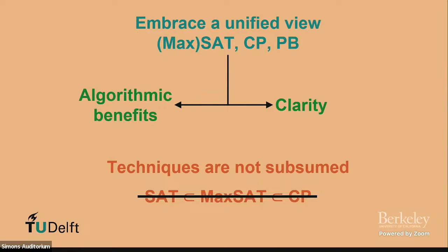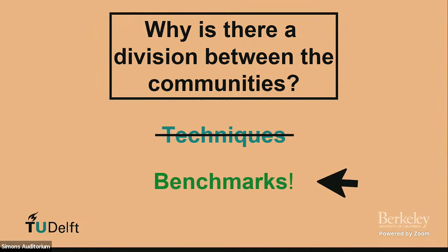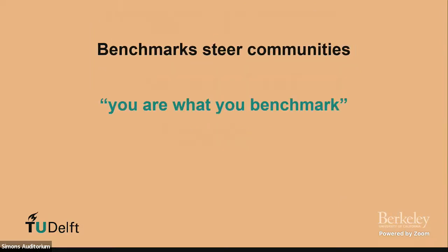Overall, I want to argue: we have this high-level view of the problem — let's embrace it, celebrate it, and exploit it to get better algorithms and explain our techniques at a higher level. It's not about techniques or paradigms subsuming each other; it's about exploiting all the information we have. But if the paradigms are conceptually the same, why do we have this divide — SAT people, CP people, PB people? If techniques can be interchanged, that's not the defining factor anymore. As I hinted at the beginning, it's really about the benchmarks. Benchmarks shape the identity of our community.